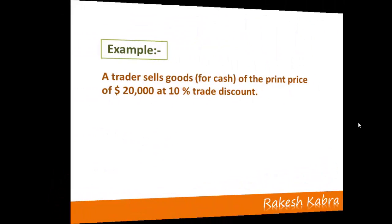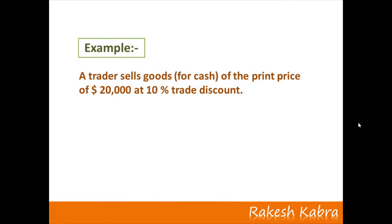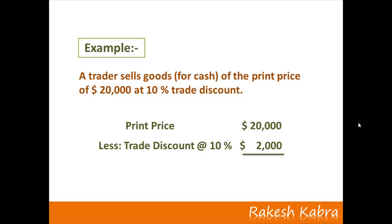Suppose a trader sells goods at a print price of $20,000 at 10% trade discount. To record this transaction, we first compute the net amount. We take the print price of $20,000 and subtract the discount amount of $2,000 (10% of $20,000). After subtraction, we get a net amount of $18,000, and with this net amount we will record the transaction in the books of accounts.